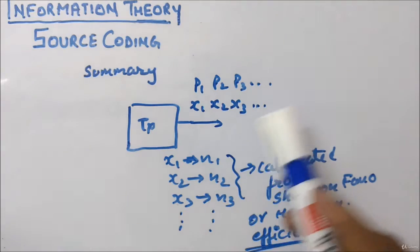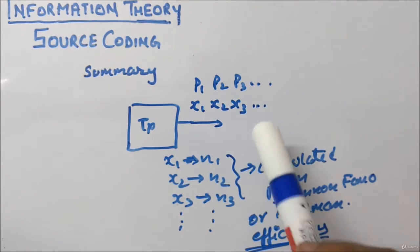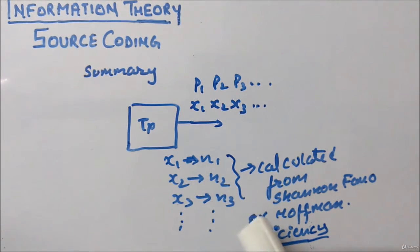It is transmitting m number of signals. By calculating the code length from Shannon-Fano or Huffman coding, you will assign the number of bits to x1, x2, x3 and so on, so that the efficiency will be higher and it will perform better.